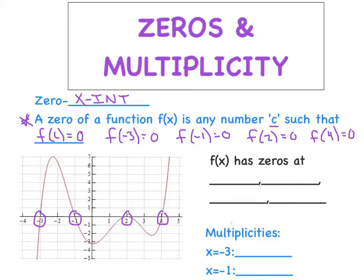We'll list those zeros right here: x equals negative 3, x equals negative 1, x equals 2, and x equals 4. Notice how we're being really specific by declaring that it is an x value.